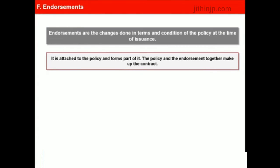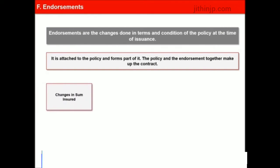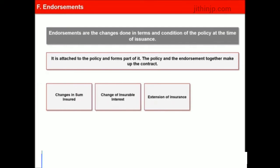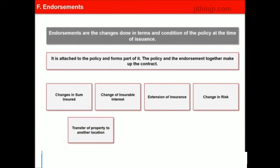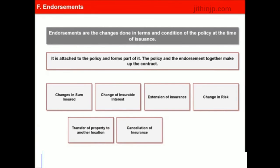Endorsements required under a policy relate to variations or changes in sum insured, change of insurable interest by way of taking a loan or mortgaging the policy to a bank, extension of insurance to cover additional perils or extension of policy period, change in risk such as change of destinations in case of an overseas travel policy, transfer of property to another location, cancellation of insurance, and change in name or address.